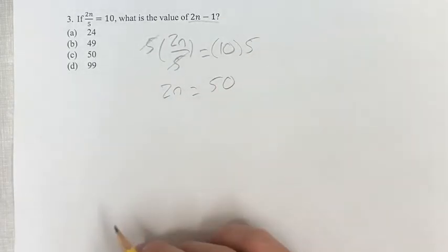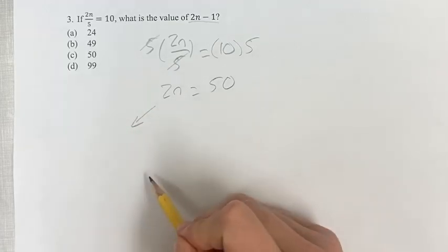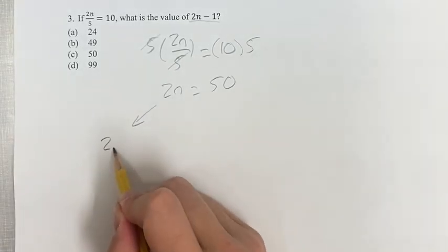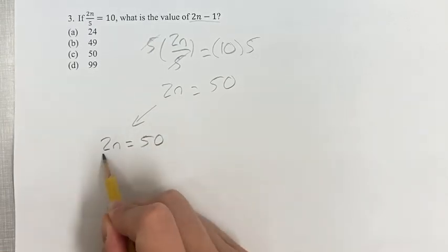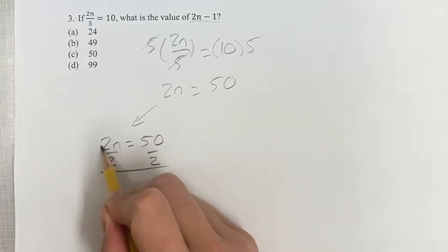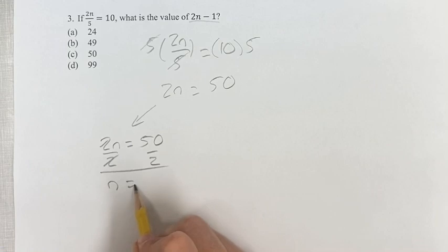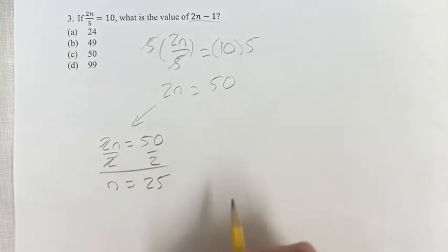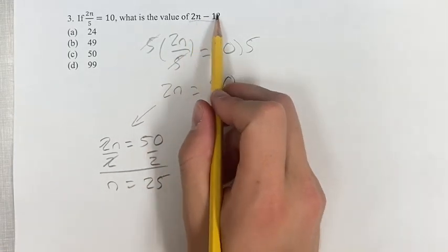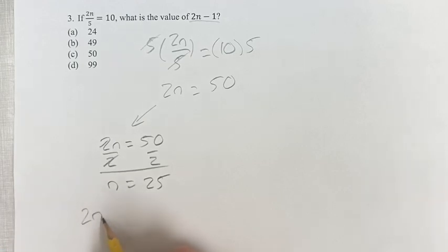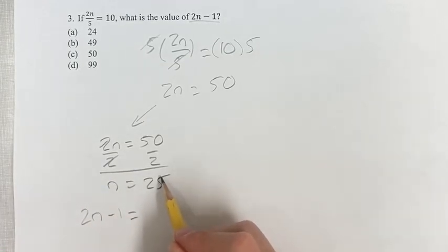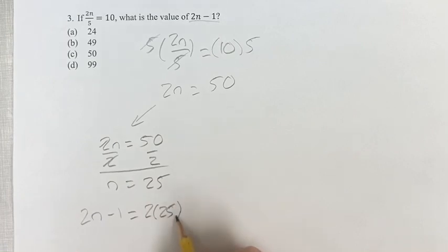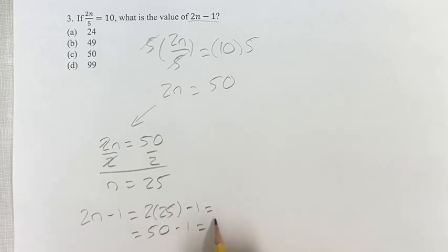Now, from here, there's two ways to go about this. There's the traditional way. If we just have 2n is equal to 50, divide both sides by 2, these cancel, and you get n is equal to 50 over 2, which is 25. And then when we're looking for the value of 2n minus 1, we have our value of n now, so it's 2 times 25 minus 1. 2 times 25 is 50 minus 1, which is 49.